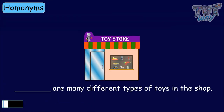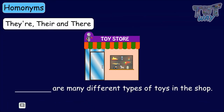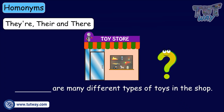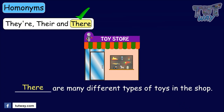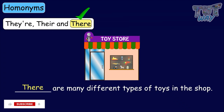Now let's fill in some blanks with one of the three homonyms. For the sentence: 'There are many different types of toys in the shop' — which one suits here? The one that suits here is there, used to start the sentence: There are different types of toys in the shop.